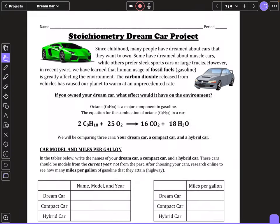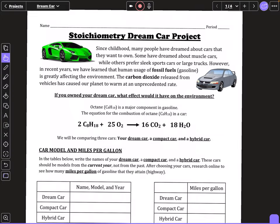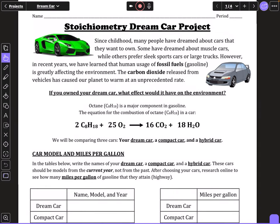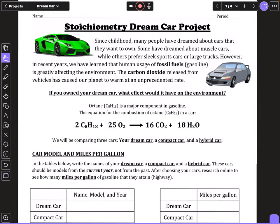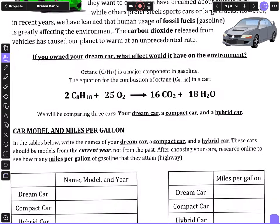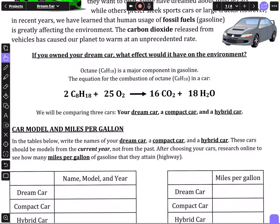This video provides instructions for our stoichiometry dream car project. You should have this handout. Since childhood, many people have dreamed about cars they want to own - some dream about muscle cars while others prefer sleek sports cars or large trucks. However, in recent years, we've learned that human usage of fossil fuels or gasoline is greatly affecting the environment. Carbon dioxide released from vehicles has caused our planet to warm at an unprecedented rate. If you owned your dream car, what effect would it have on the environment?